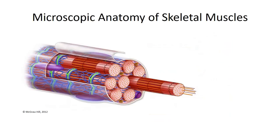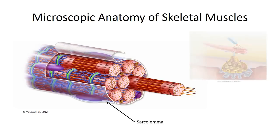Next, we move our attention to the muscle cell membrane. Again, a very unique structure with a unique name. In the case of skeletal muscle, the cellular membrane is referred to as the sarcolemma. Similar to what we see with neural cell membranes, the sarcolemma is rich in sodium and potassium channels, which facilitate the transmission of action potentials across the membrane to trigger contraction of the muscle fiber.